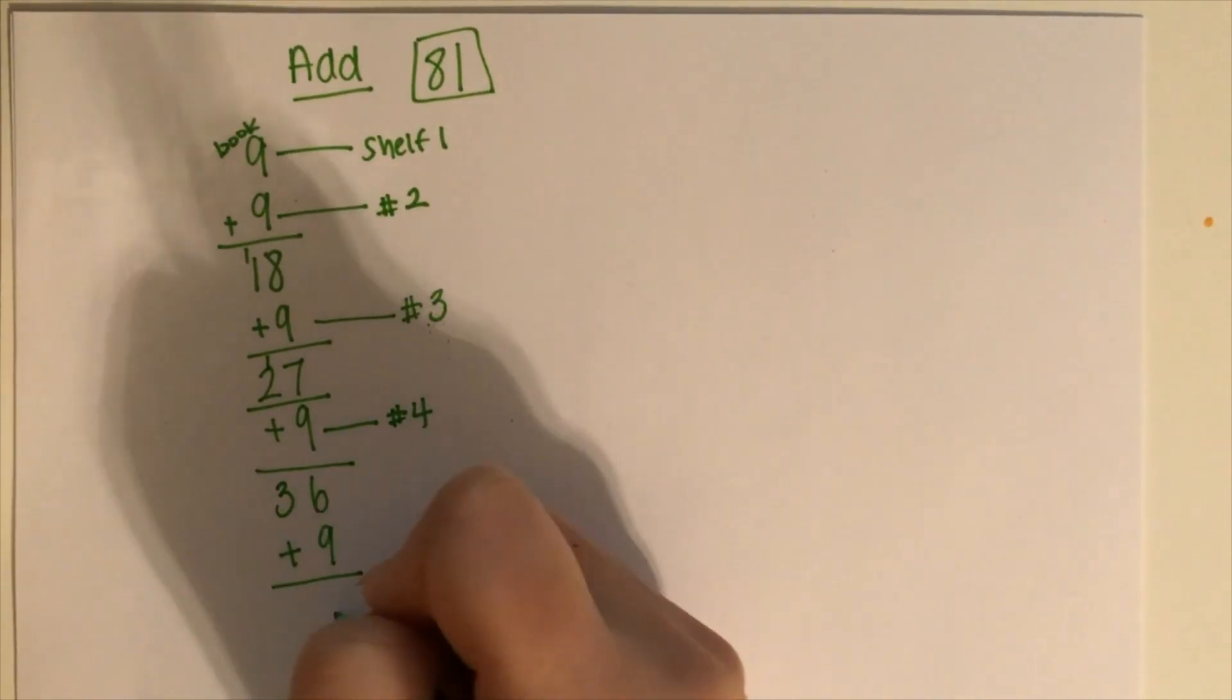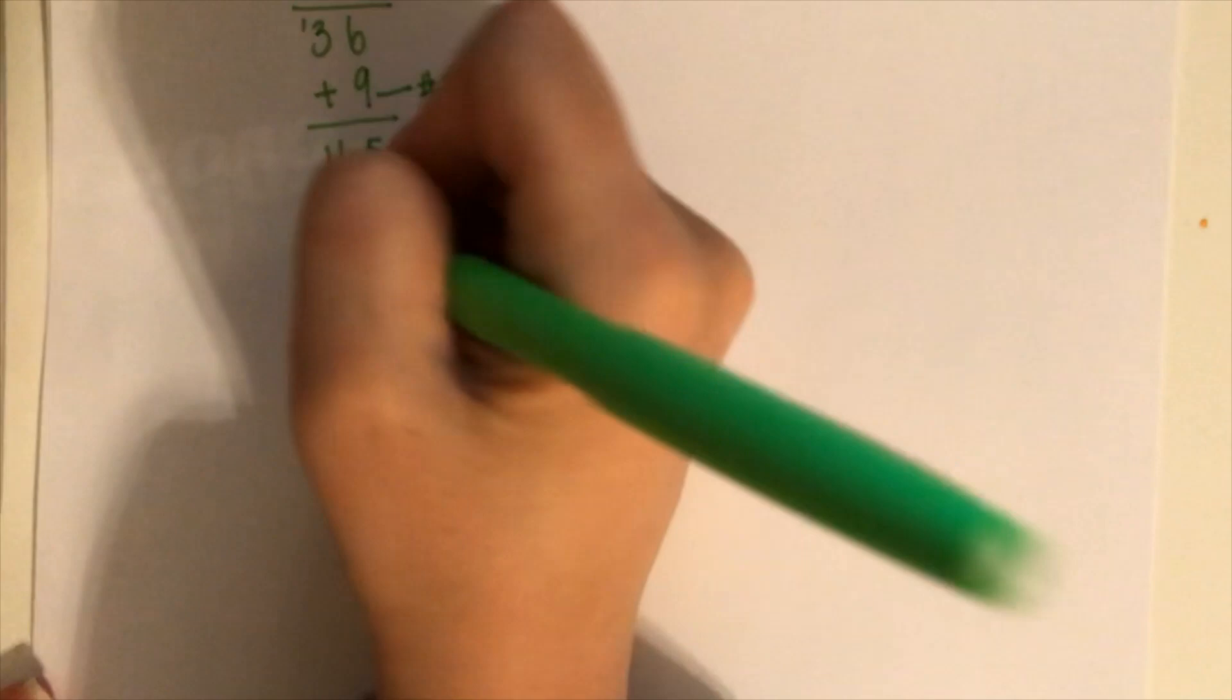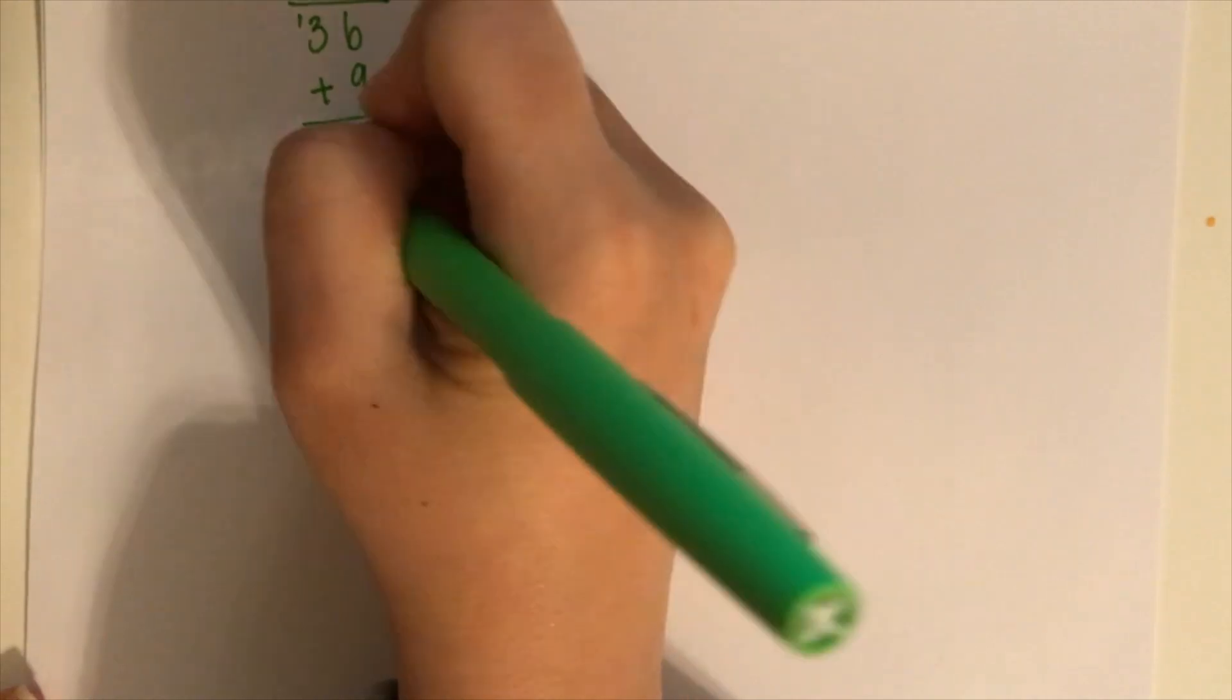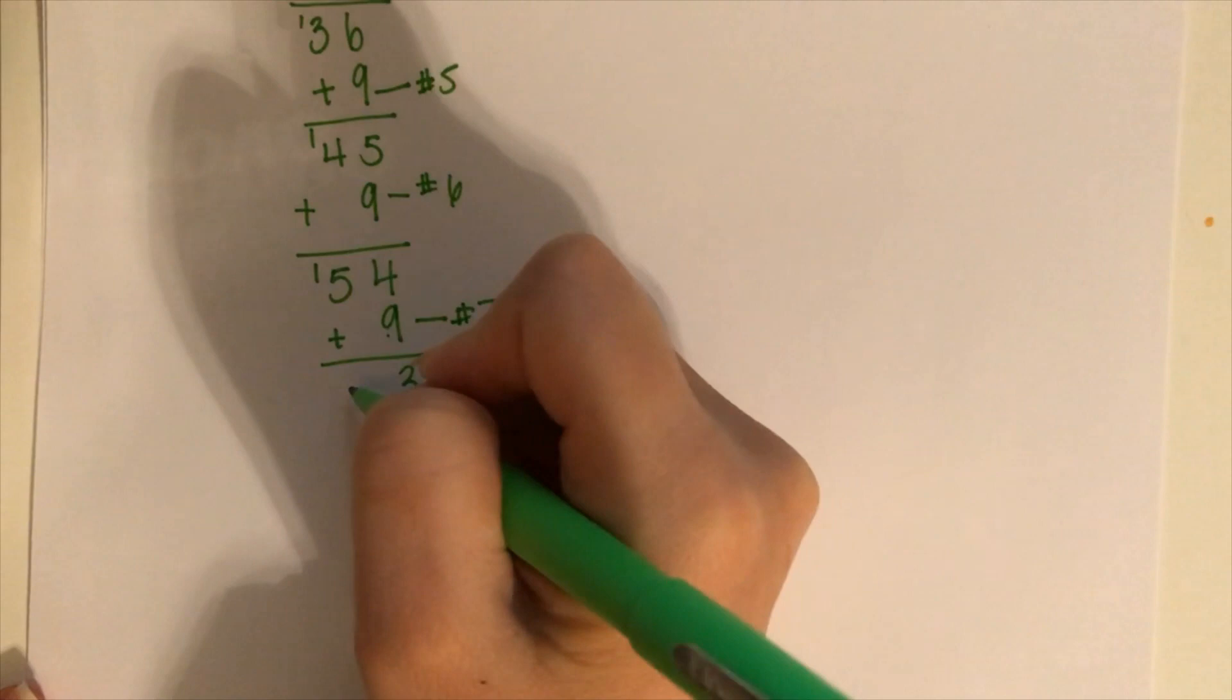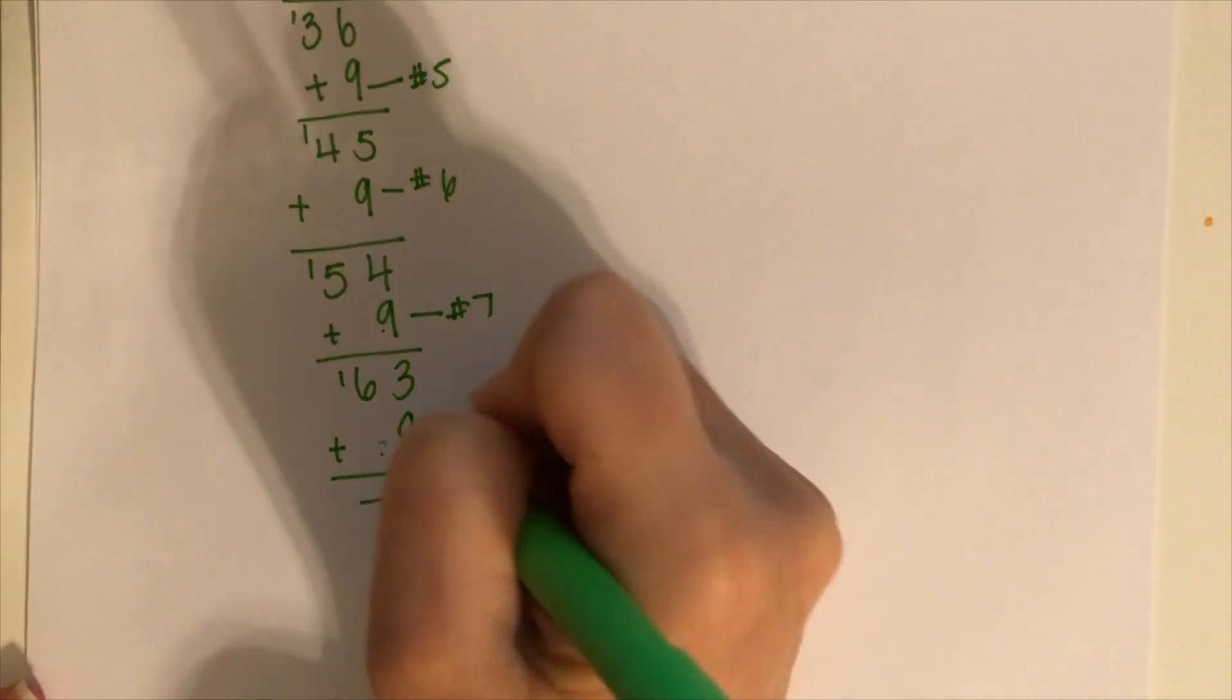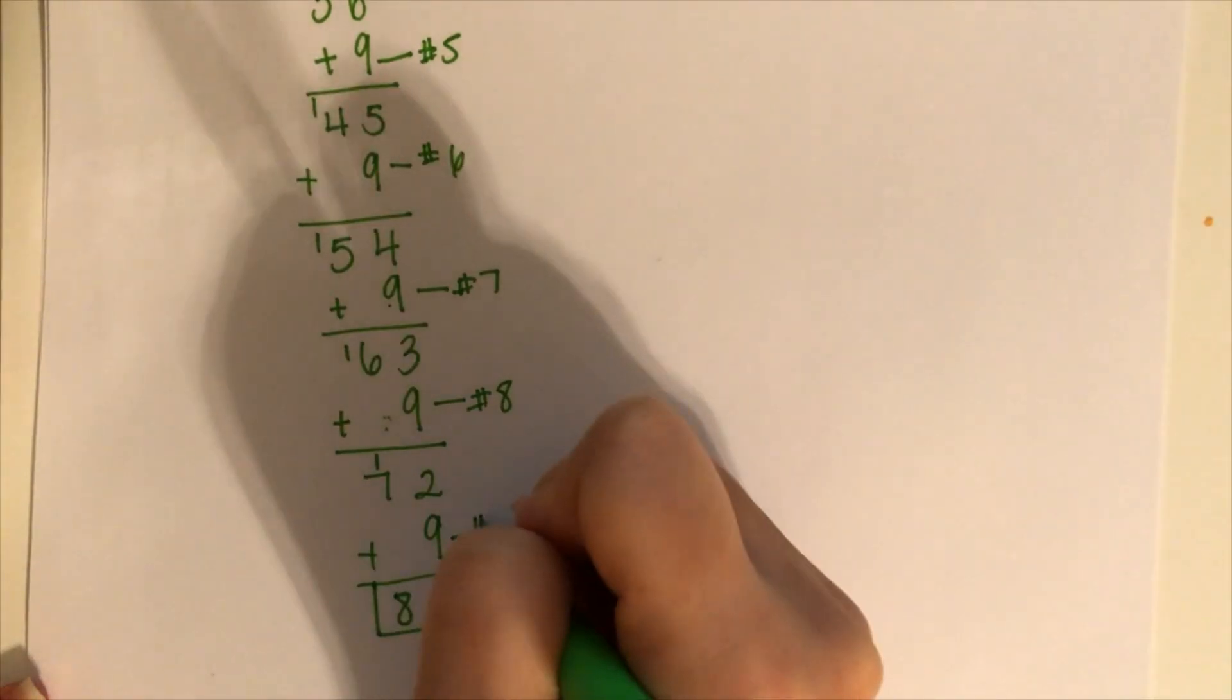Add nine more. 45. That's shelf number five. Again, I will go straight down. This time I'm just going to because I think it makes more sense. Plus nine more. And this is number six. 54 plus nine more. This is number seven. Nine and four, 13, five, six. Nine more, 12, seven. This is number eight. And then nine more is 81. That's the number we wanted to get to. And this is shelf number nine.